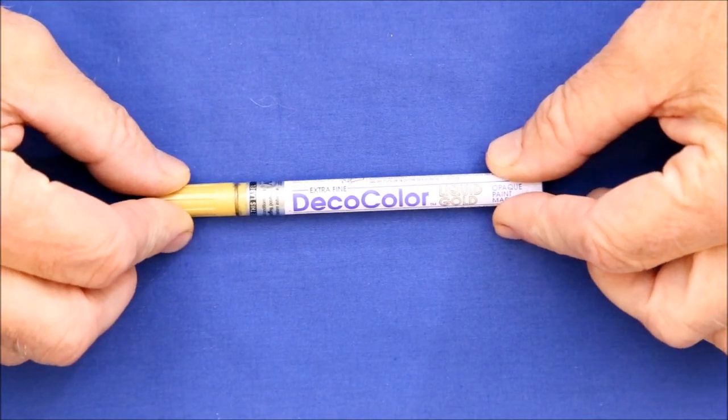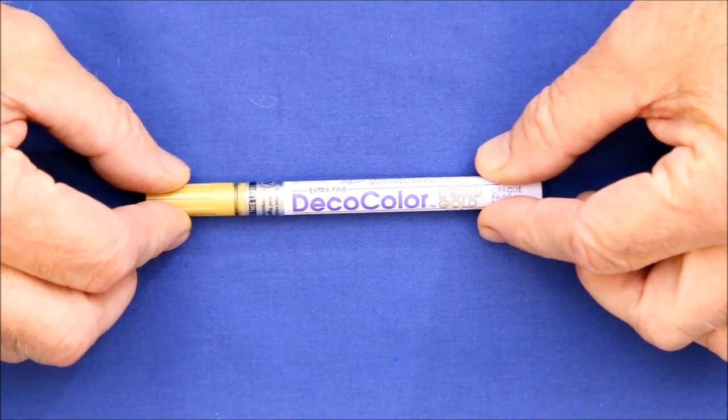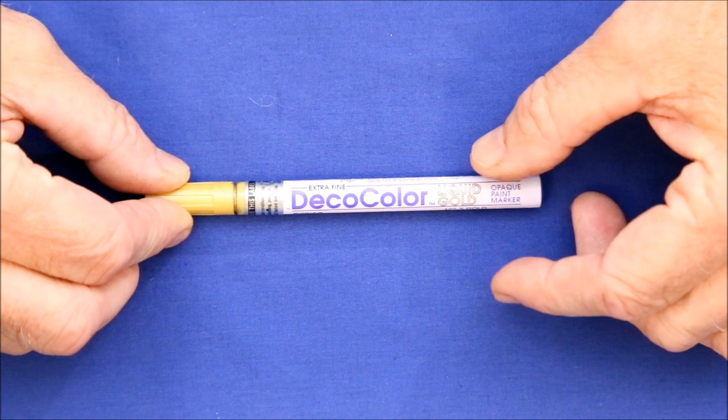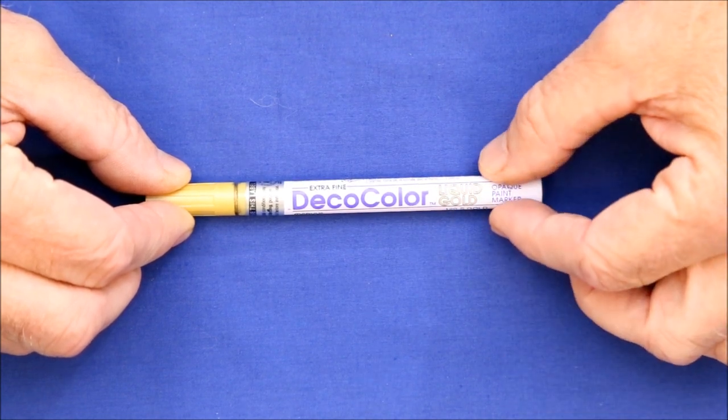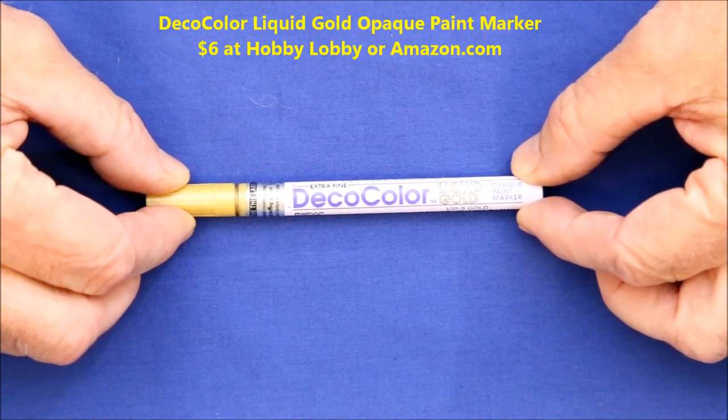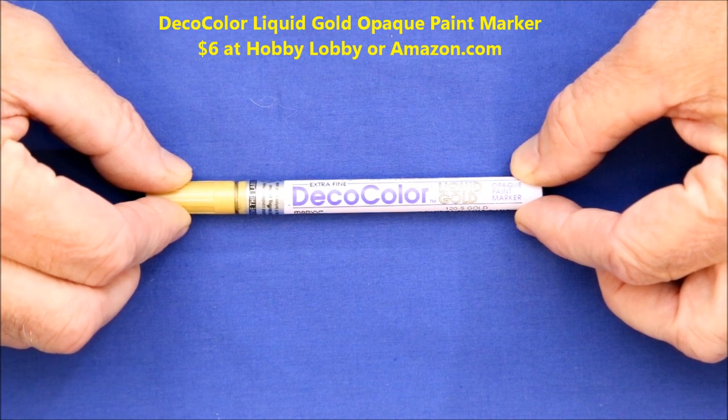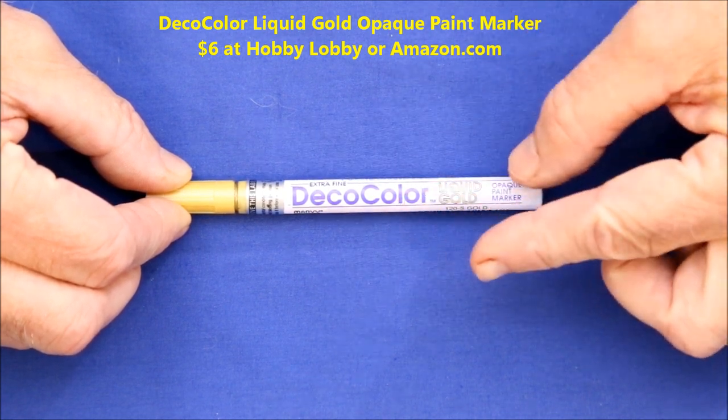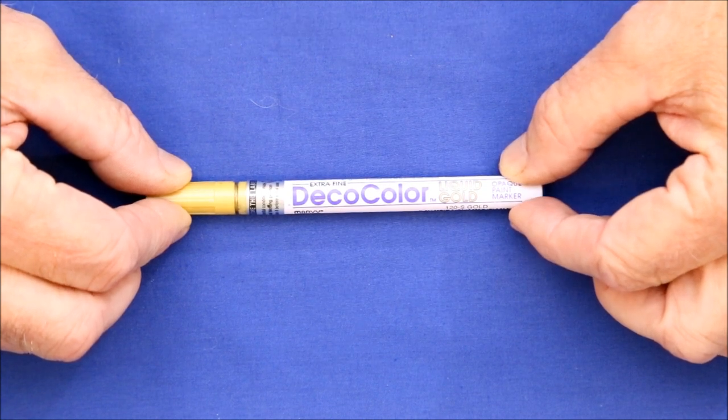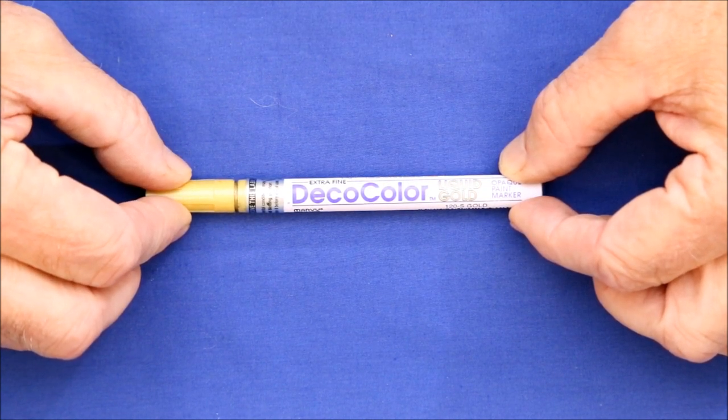First up, after comparing a dozen different gold paints and pens, I found the one that provided the closest match to the gold paint used in decals was Deco Colors Liquid Gold Opaque Pen Marker. Its color is slightly lighter than decals, but it darkens to a near perfect match after applying a coat of protecting shellac.